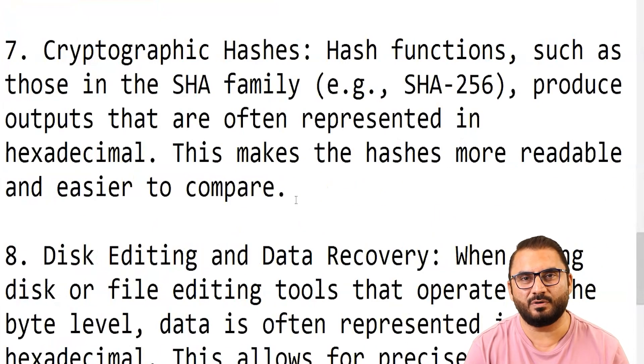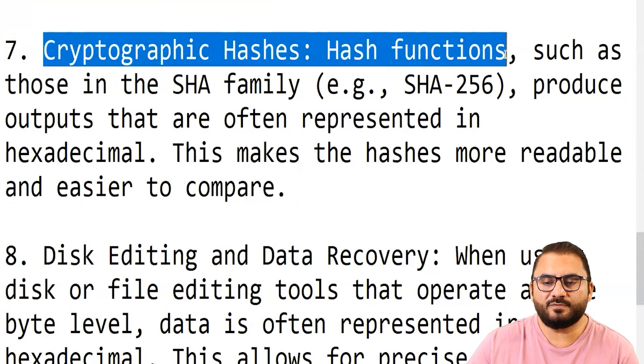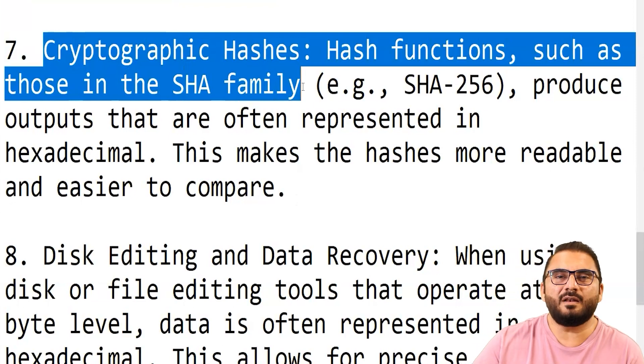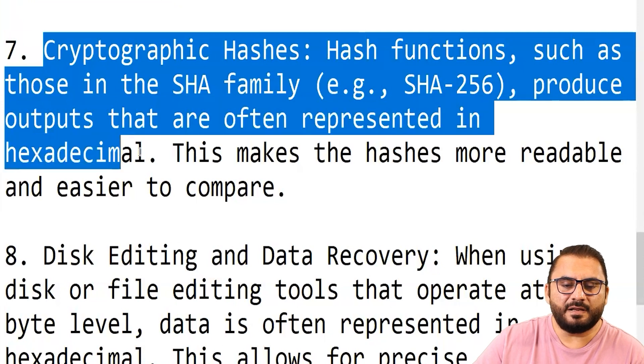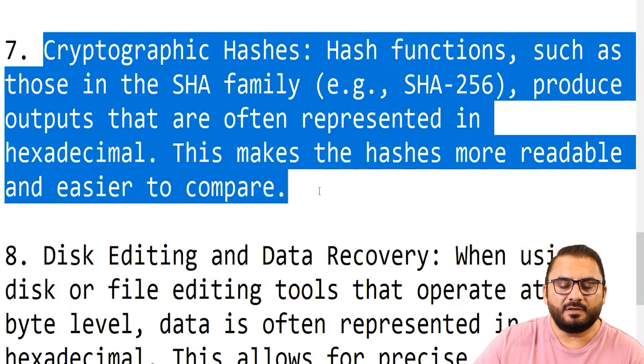Cryptographic hashes involve public keys, private keys, and similar keys used for encryption and decryption. These keys are generated and used by the computer in binary form, but humans cannot easily read or understand binary. So they are presented in hexadecimal form and are called cryptographic hashes. Cryptographic hash functions such as those in SHA produce outputs that are often represented in hexadecimal, making the hashes more readable and easier to compare.